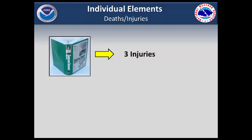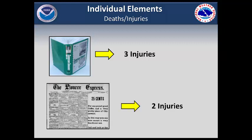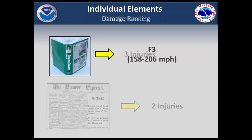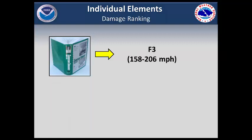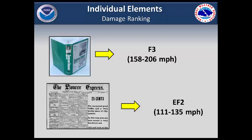Significant Tornadoes said there were three injuries, while local newspapers said there were two. An older lady was blown from a house wreck and suffered a shoulder injury and facial cuts. A four-year-old boy in the same house wreck had severe scalp wounds. Significant Tornadoes rated this tornado as an F3, and newspaper accounts said wooden homes and barns were leveled. There were no building codes in 1896, so homes and barns were likely not constructed as well as they are today, but this is a big judgment call — it could just as easily be rated an EF2 tornado.